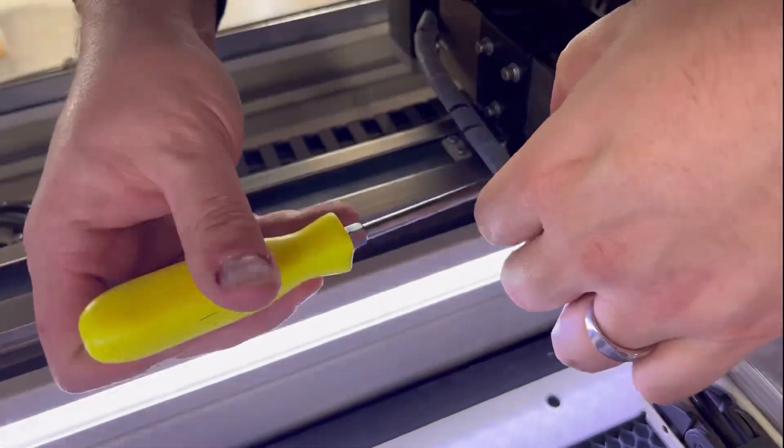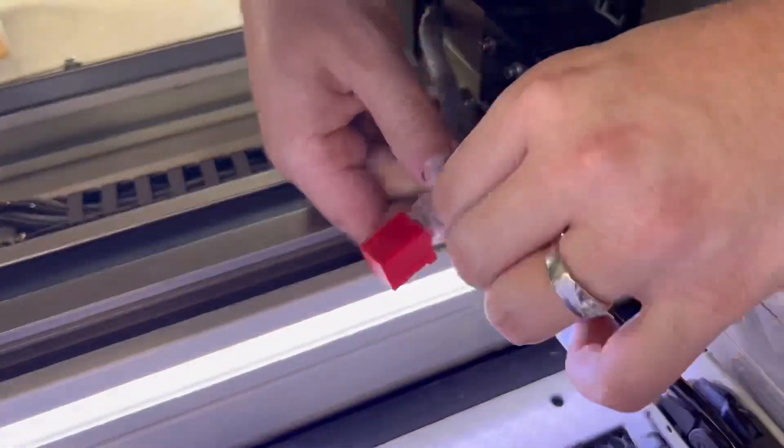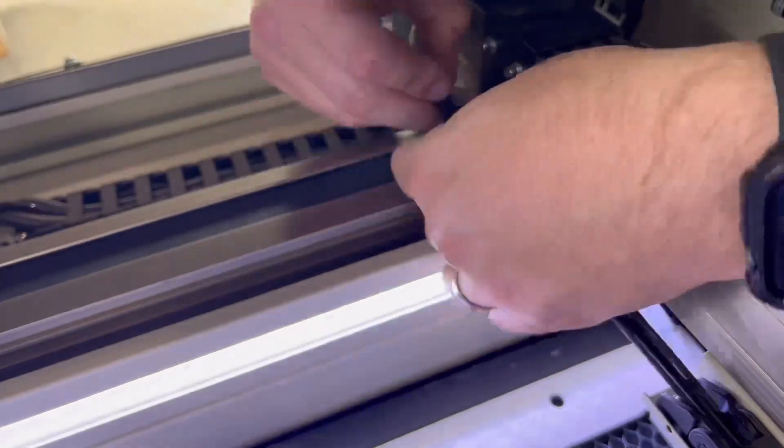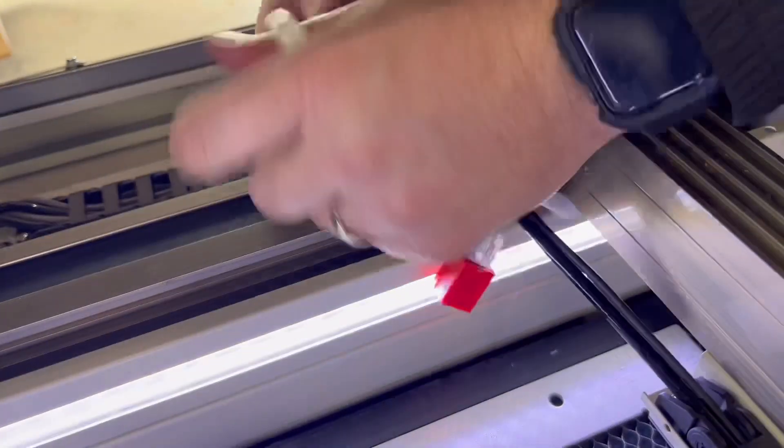The first step is to unscrew the sensor from the X gantry, then unravel the clear plastic wire protector or wire organizer.